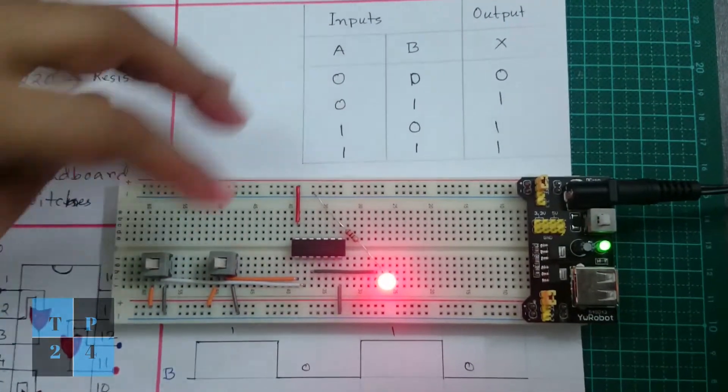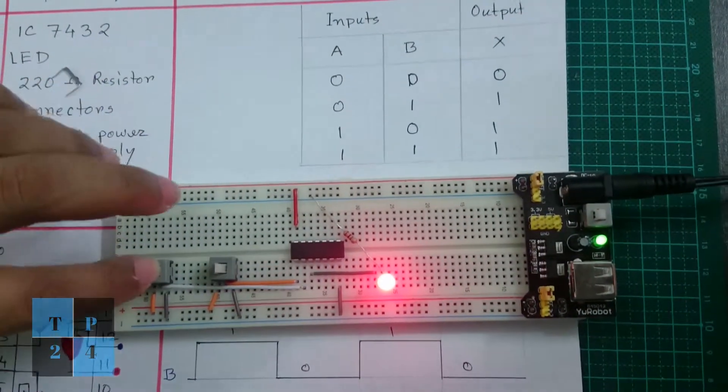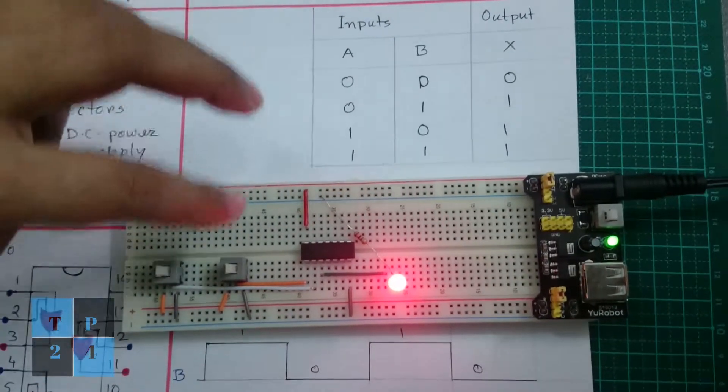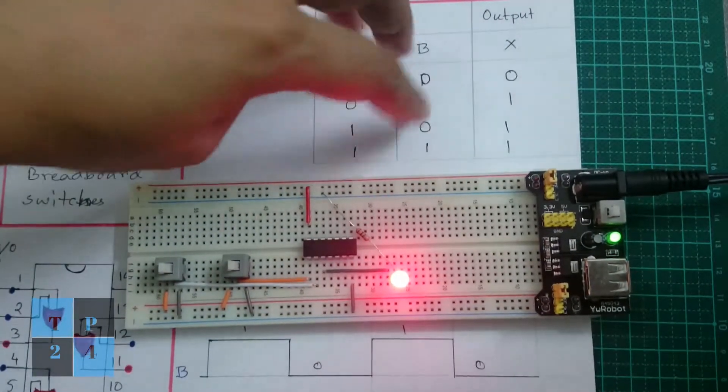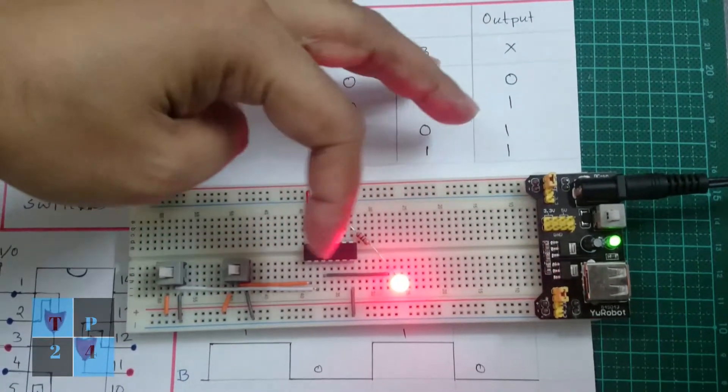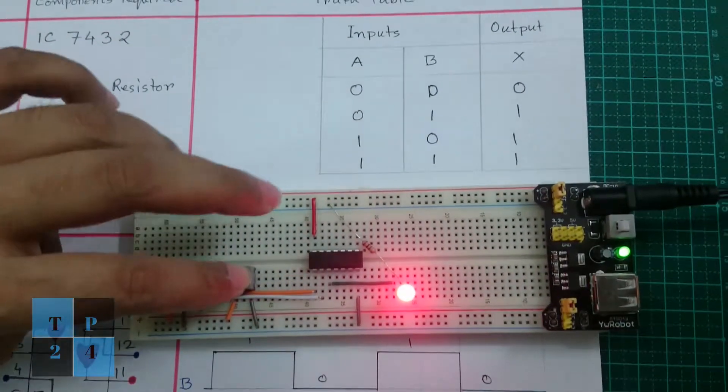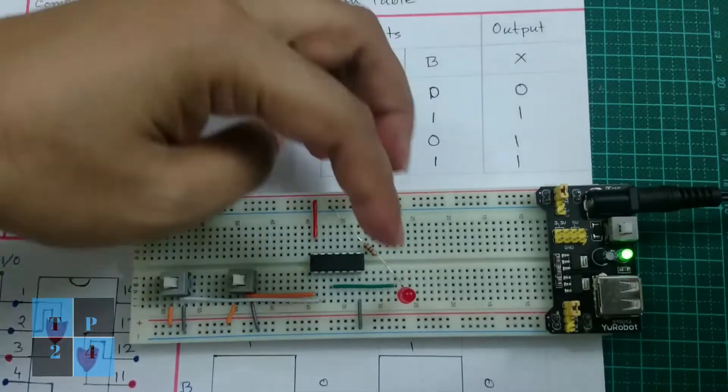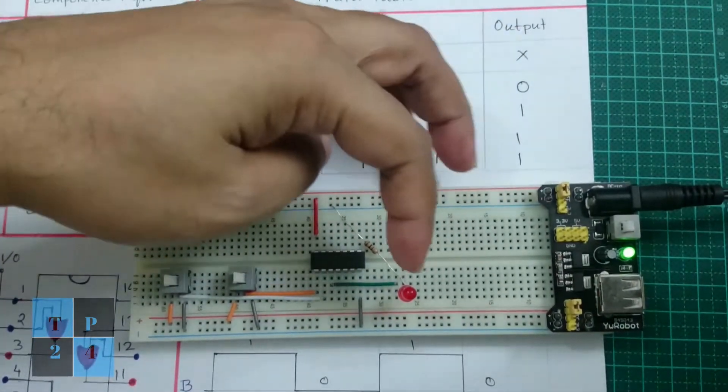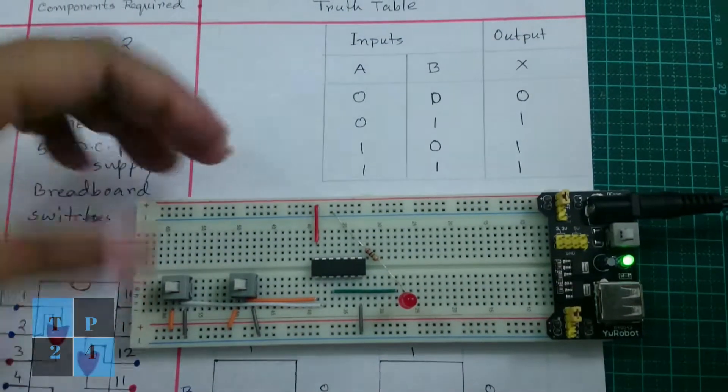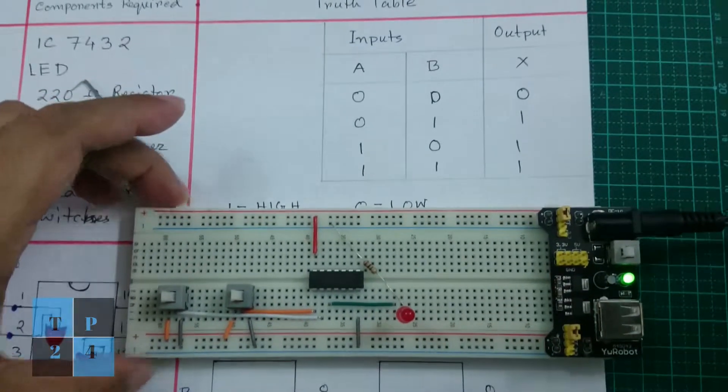Now I am making one high and one low. So low and high, output is high, so LED is blinking. If I make it low, that means 0 and 0, output is low, 0, so LED is not blinking. This supports the truth table of the OR gate. So we justified the circuit with the truth table.